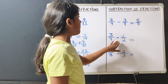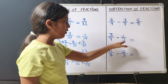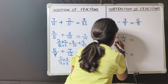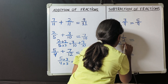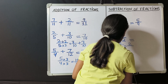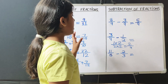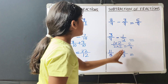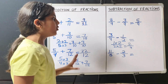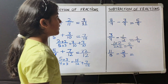3 upon 4 minus 1 upon 2. Here the denominator is 4 and here the denominator is 2. We will multiply 1 by 2 and 2 by 2. So 1 times 2 is 2 and 2 times 2 is 4. Now we will subtract 2 upon 4 from 3 upon 4. So 3 minus 2 is 1 and we will write this 4 as it is. So 1 upon 4 is our answer.